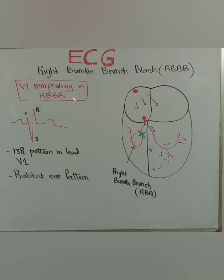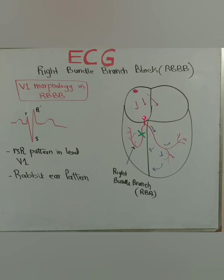Now, in comparison with normal, let's see what changes happen in the right bundle branch block situation. There is a block not allowing the impulse to pass. The impulse came from the SA node, went to the atria, caused atrial depolarization generating a P wave, then entered the AV node generating the PR segment, then went to the bundle of His. It first entered into the septal branch and depolarized the septum, making the same small positively deflected R wave as before — because the blockage is post-septal depolarization.